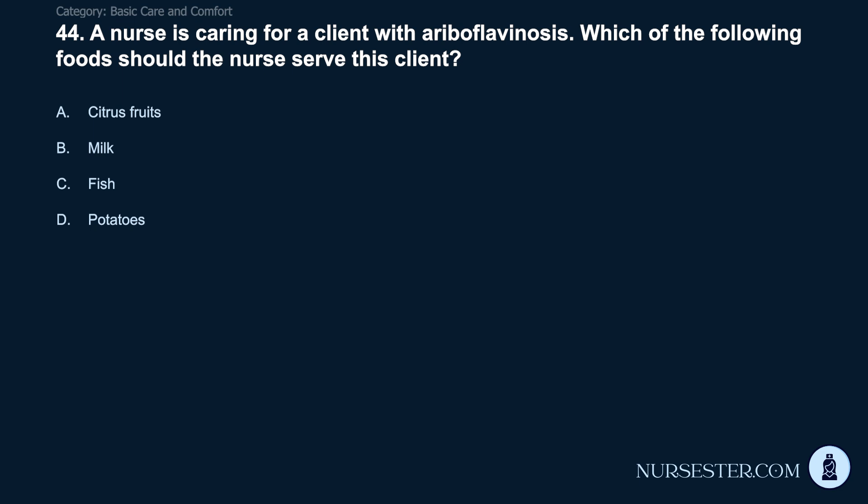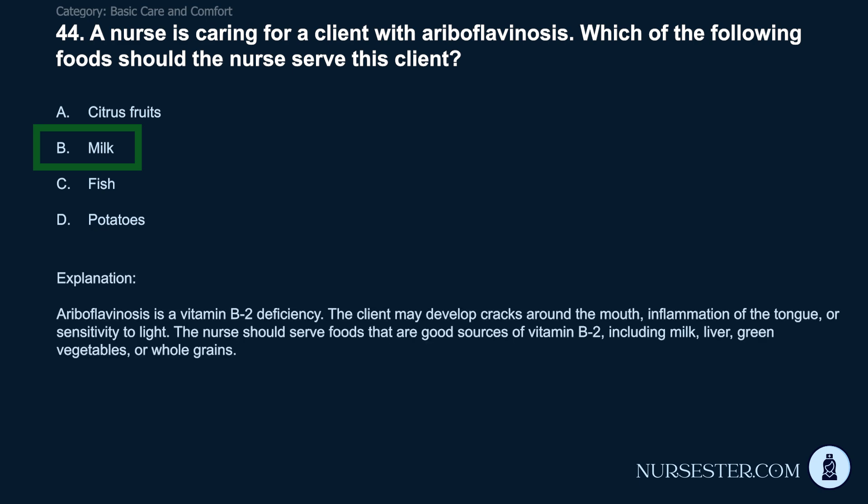Question 44: A nurse is caring for a client with ariboflavinosis. Which foods should the nurse serve? A) Citrus fruits. B) Milk. C) Fish. D) Potatoes. Correct answer: B. Milk. Ariboflavinosis is a vitamin B2 deficiency. The client may develop cracks around the mouth, inflammation of the tongue, or sensitivity to light. The nurse should serve foods that are good sources of vitamin B2, including milk, liver, green vegetables, or whole grains.